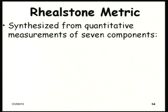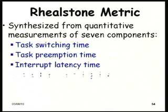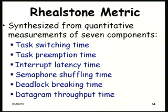How do you benchmark real-time computers? You need to identify parameters important for real-time applications. The important parameters include: task switching time, task preemption time, interrupt latency time, semaphore shuffling time, deadlock breaking time, and datagram throughput time. These are some of the important parameters covered by the real-stone metric. We will also see other parameters not included in the real-stone metric that are important.